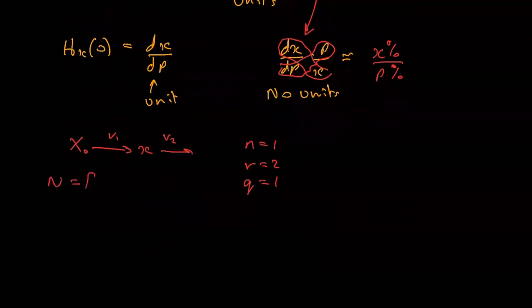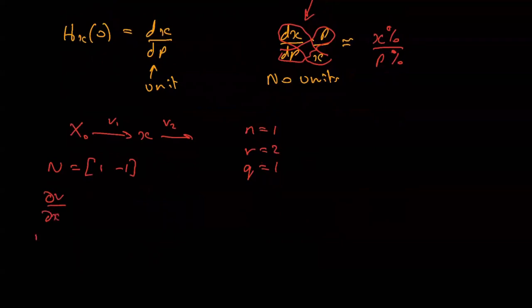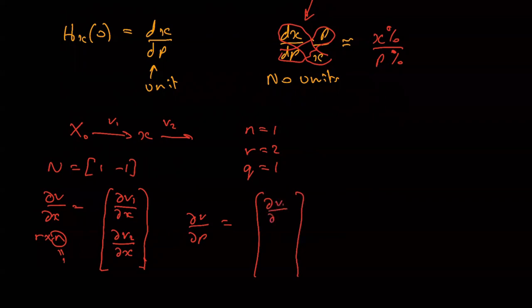The stoichiometry matrix is one minus one. The dv by dx, remember that's an r by n matrix, that'll be dv1 by dx. There's only going to actually be one column because the n is one. So dv2 by dx. The dv by dp, that will just be also a column, which will be dv1 dx0 and zero.